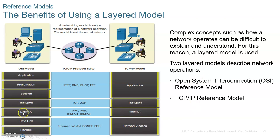The data is encapsulated through each layer before it exits onto the transmission media. The best way to remember the seven layers of the OSI model is the mnemonic: 'All people seem to need data processing.'